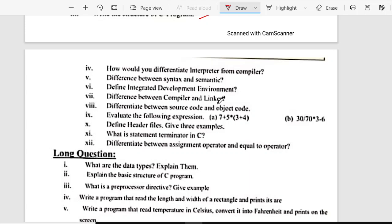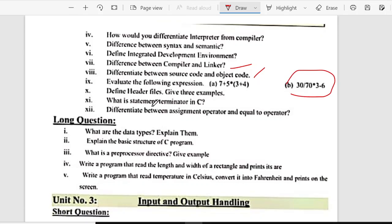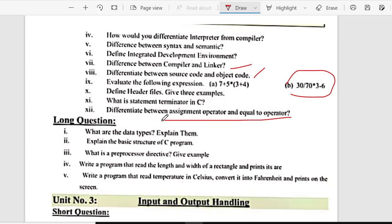differentiate between compiler and linker. And eight is, differentiate between source code and object code. Ninth is, evaluate the following expression. A is seven plus five. And B is, multiply, three plus four. And B is. Ninth is, define header file, give three examples. Eleventh is, what is statement terminator in C. Twelve is, differentiate between assignment operator and equal operator.